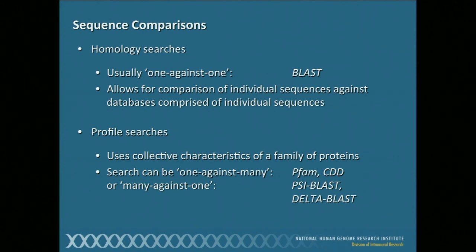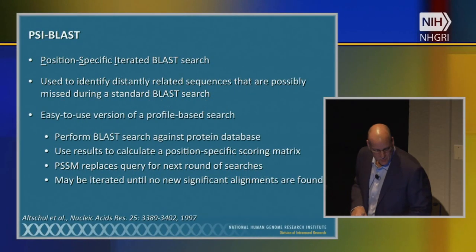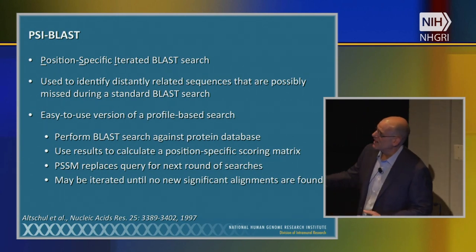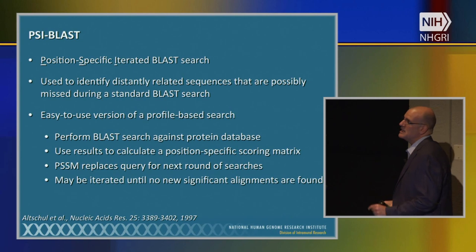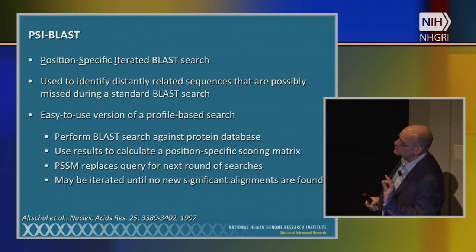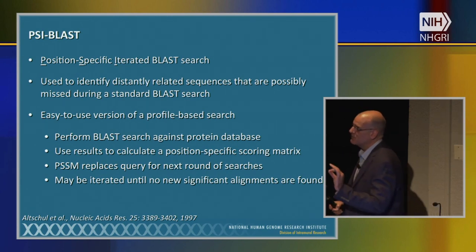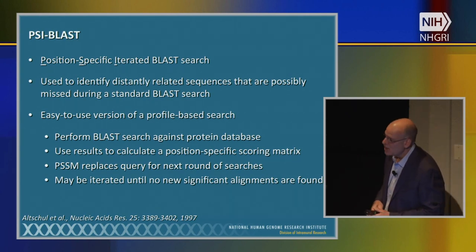That takes care of the first bit — one against many. Now we're going to flip things around. In the first case we were using a single sequence to search against protein families. Now we're going to do the converse. The first example of this is called PSI-BLAST — Position Specific Iterated BLAST Search from NCBI. The value of this technique is that it's a great tool for finding similarity between proteins of interest that you may not find during a standard BLAST search — a repeating theme for this morning's lecture.